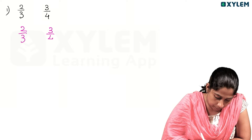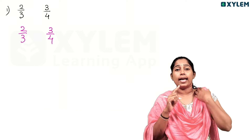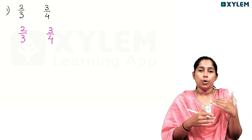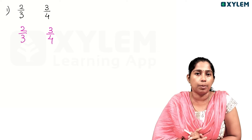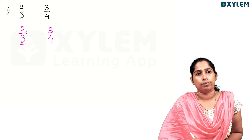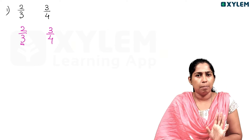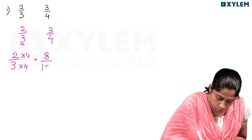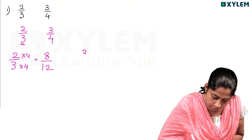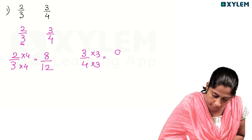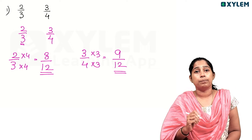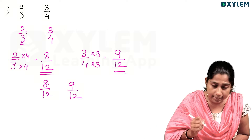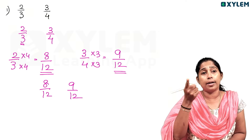Now let us compare 2 by 3 and 3 by 4. The denominators are different, so we find the least common multiple of 3 and 4, which is 12. We multiply: 2 by 3 becomes 8 by 12, and 3 by 4 becomes 9 by 12. Now the two denominators are the same — 8 by 12 and 9 by 12. We compare the numerators.